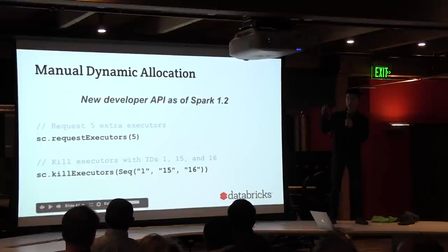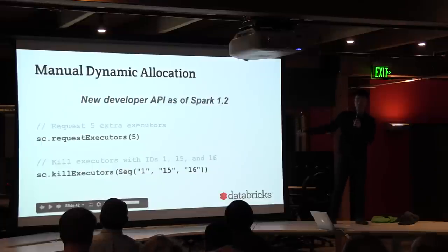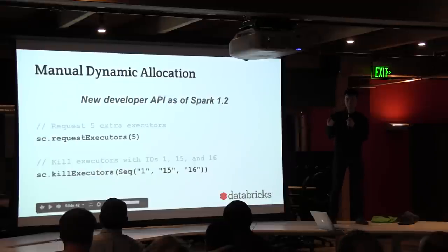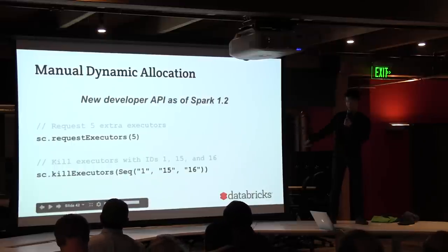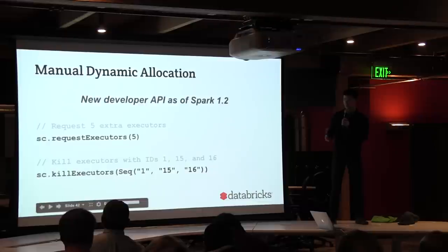Aside from the automatic dynamic allocation, you can also do this manually in Spark 1.2. If you have other policies you want to use, you can call sc.requestExecutors or sc.killExecutors with given executor IDs in your own application. For instance, you might not want to remove executors that have cached blocks, or you might want to request executors on certain nodes with data on them.